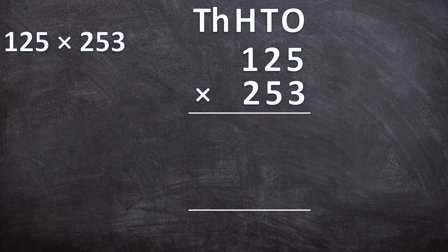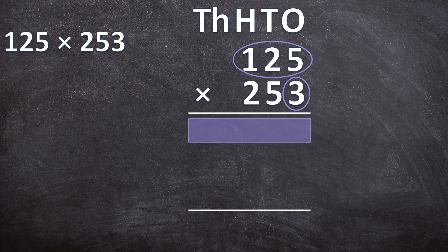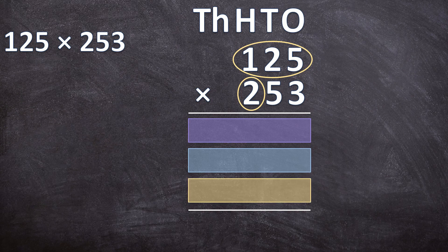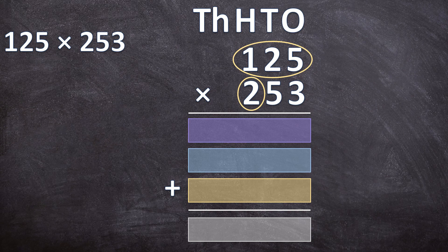When multiplying by a three-digit number, you take the number you're multiplying with — in this case 253 — and separate it. First you get the answer for 3 times 125 and write that directly underneath the first line. Next you get the answer for 50 times 125 and write that in the second line. Lastly you get the answer for 200 times 125 in the third line. Then you add those three answers together to get your final answer.